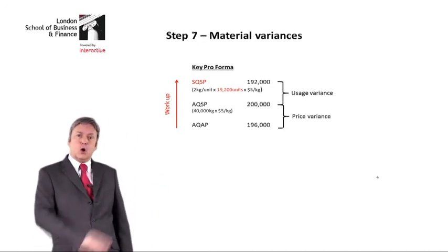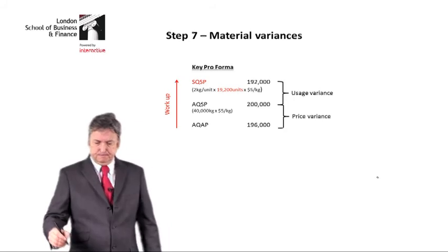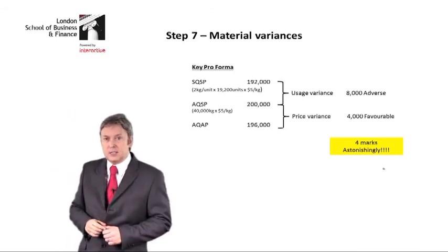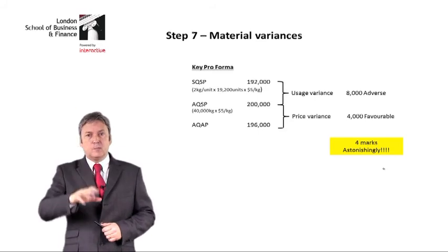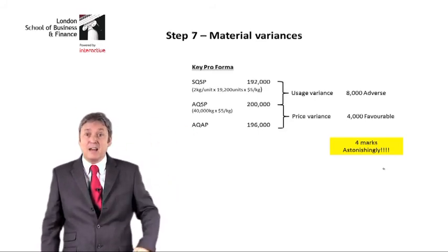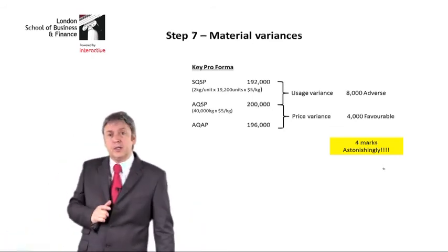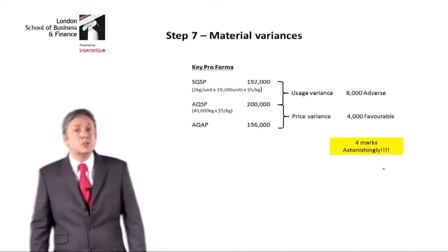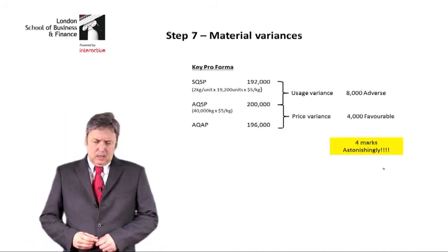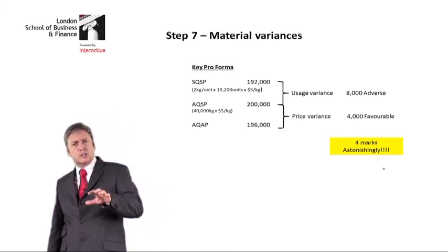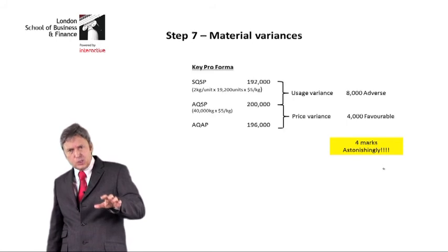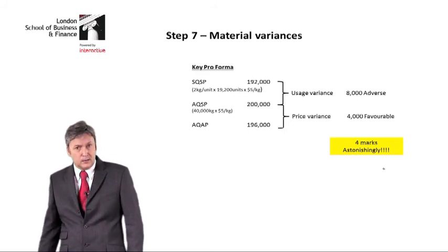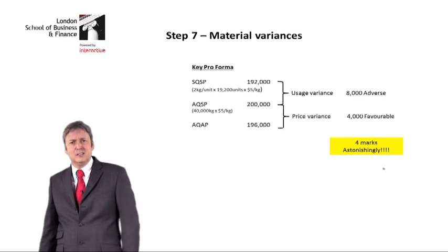So we work from bottom to top and get the numbers. Once we've got the numbers, it's terribly easy — we simply say top minus bottom. All my variance analysis is the same: so long as we say top minus bottom, if it's positive it's favourable, if it's negative it's adverse. Couldn't be easier. The whole idea is you practice this a few times and you won't have to think. What shocks me is that you get four whole marks for that — and all I'm going to say to the examiner is thank you. Four marks for a standard computation.